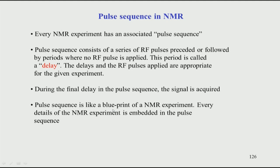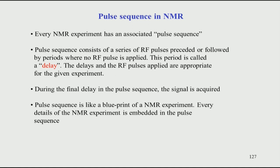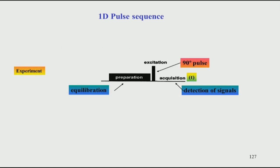The results you get depend entirely on how this pulse sequence was constructed. As you go to more advanced NMR spectroscopy, the pulse sequence becomes more and more complicated. In this course we will restrict to a simple 1D experiment and a few 2D experiments. In the simplest 1D NMR experiment, the pulse sequence looks like this: you have an excitation pulse — a 90-degree pulse — and immediately after the pulse the signal starts coming and relaxation begins.